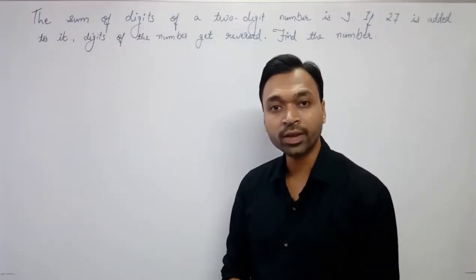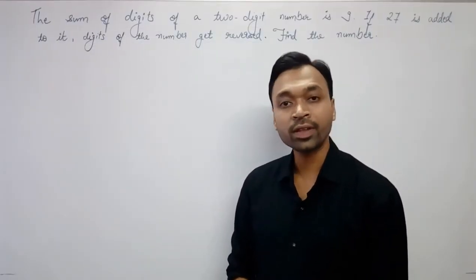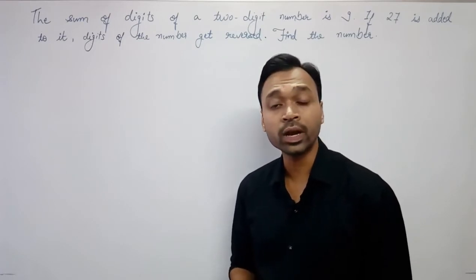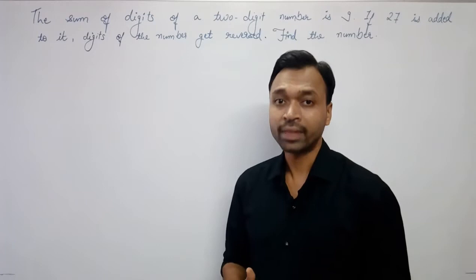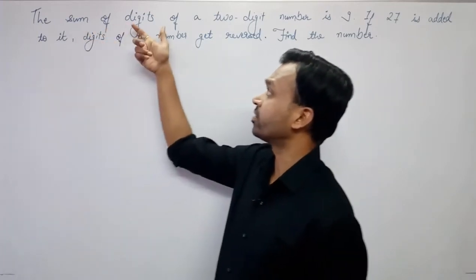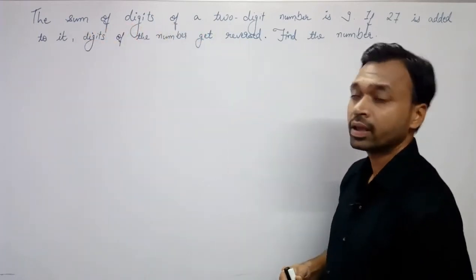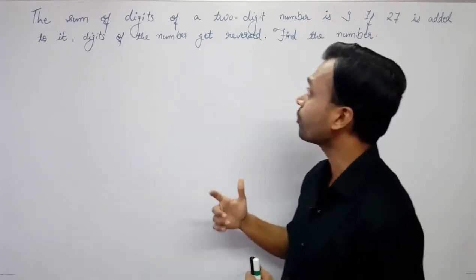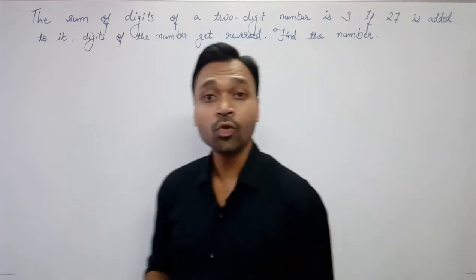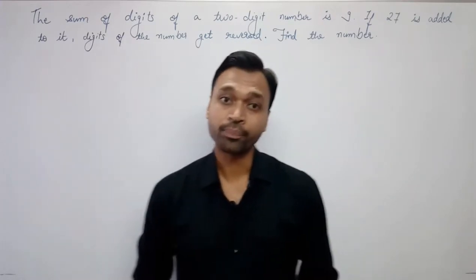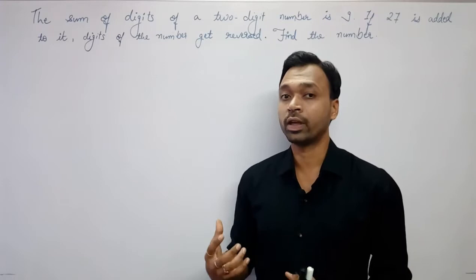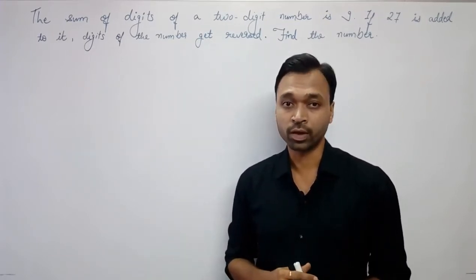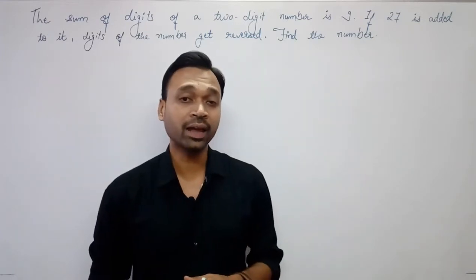Hello students, welcome to my channel Momentum. In today's lecture we will discuss a word problem based on the unit 'Pair of Linear Equations in Two Variables.' The problem is: the sum of digits of a two-digit number is 9; if 27 is added to it, the digits of the number get reversed. Find the number.